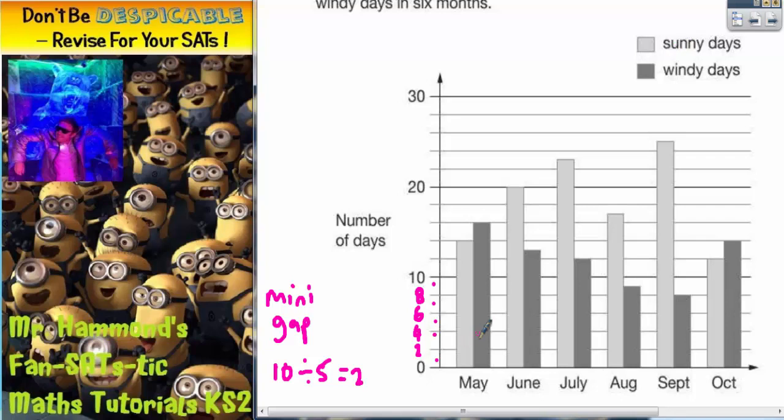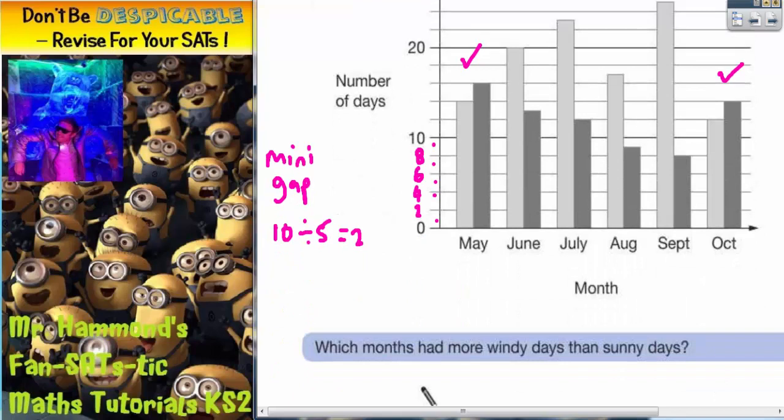So in May, is the dark grey bar bigger than the light grey bar? Yes it is, so that one. In June, is the dark grey bar bigger? No. So July, dark grey is not bigger. August, dark grey is not bigger. September, dark grey is not bigger. October, the dark grey bar is bigger. So in May and October, there are more windy days in dark grey than there are sunny days in light grey. And that is the answer to our first question.